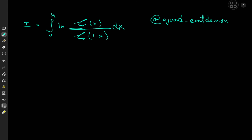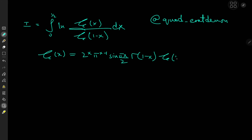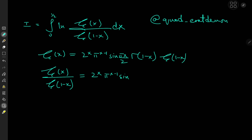So how should we begin? Intuitively one might think to start with log properties, but there's a better way: invoking the functional equation for the zeta function. We know that ζ(x) = 2^x · π^(x−1) · sin(πx/2) · Γ(1−x) · ζ(1−x). The cool thing is that now we have a ratio of ζ(x) and ζ(1−x), so ζ(x)/ζ(1−x) = 2^x · π^(x−1) · sin(πx/2) · Γ(1−x).